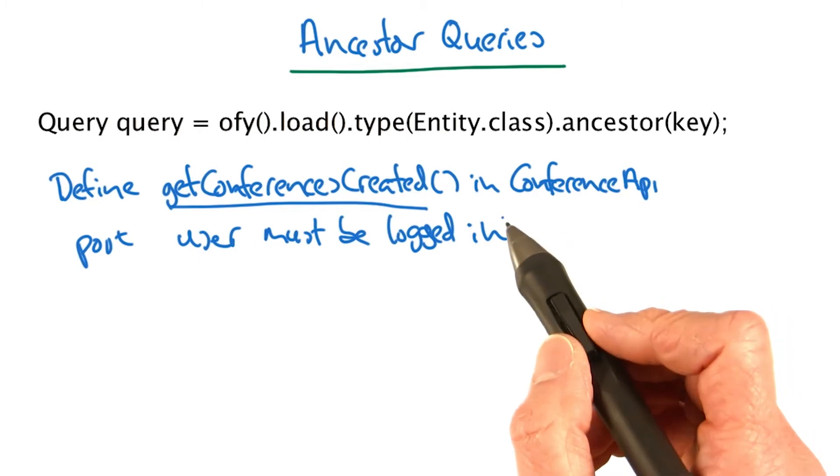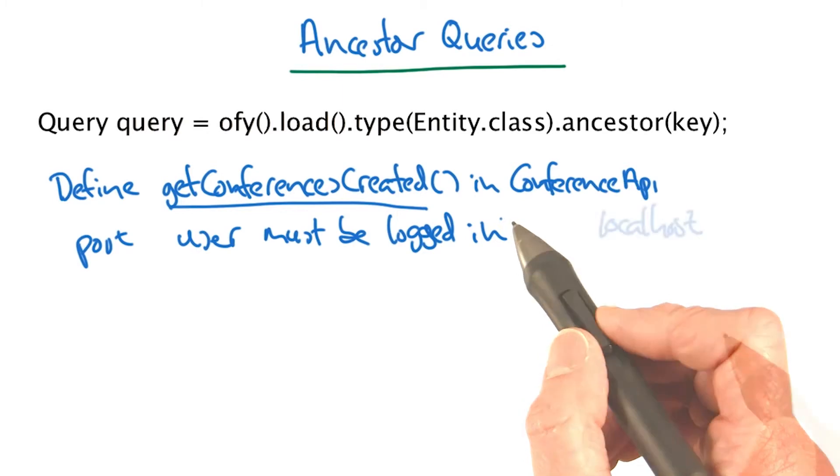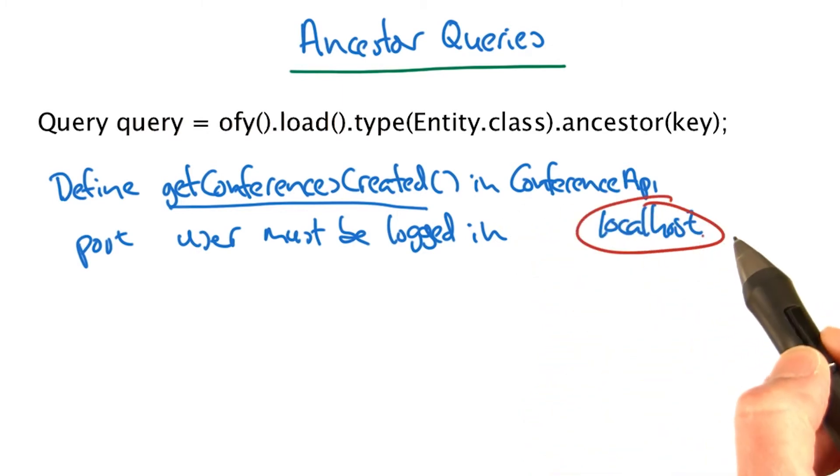Define the function to return all the conferences that the user created. And again, test on localhost before you deploy to AppSpot and run your query on localhost first. Because if you deploy direct to AppSpot first and then try to run the query for the first time, you're going to find it doesn't work.